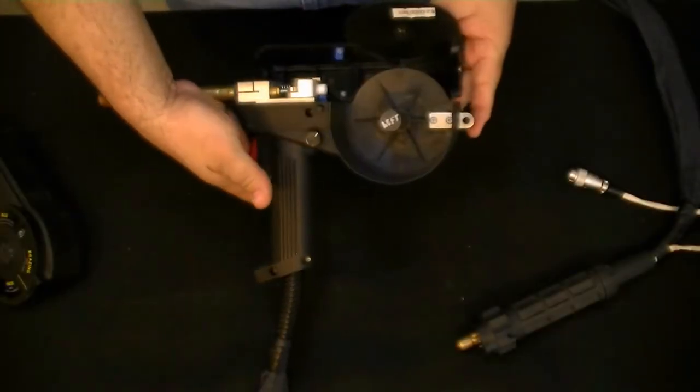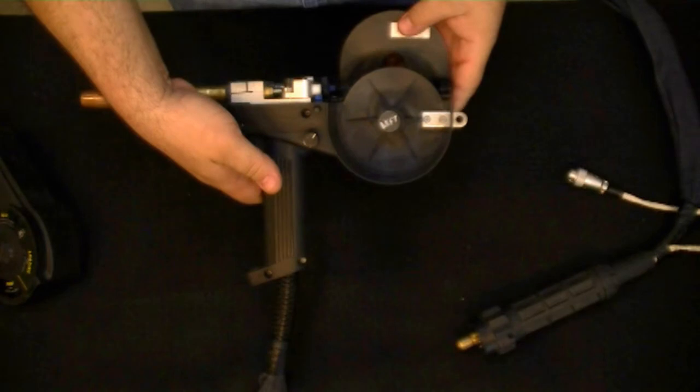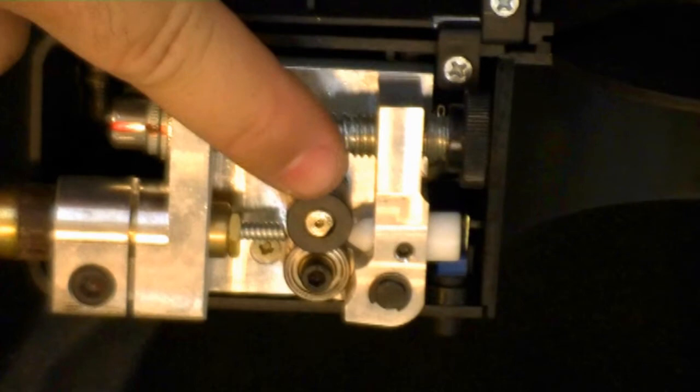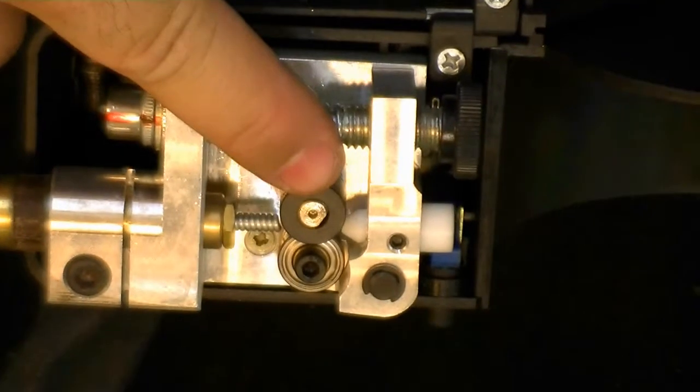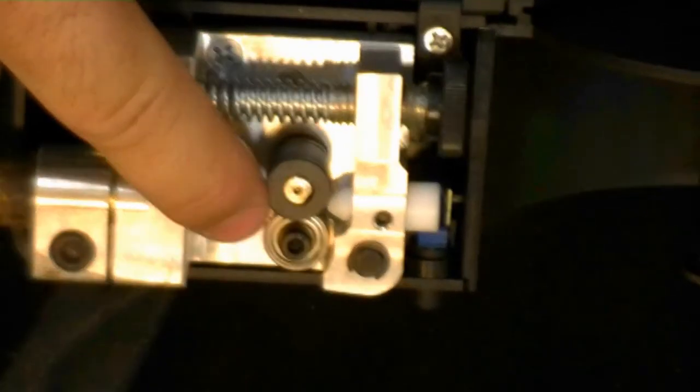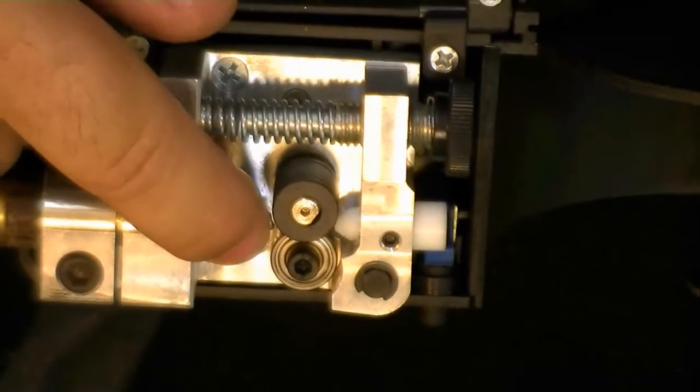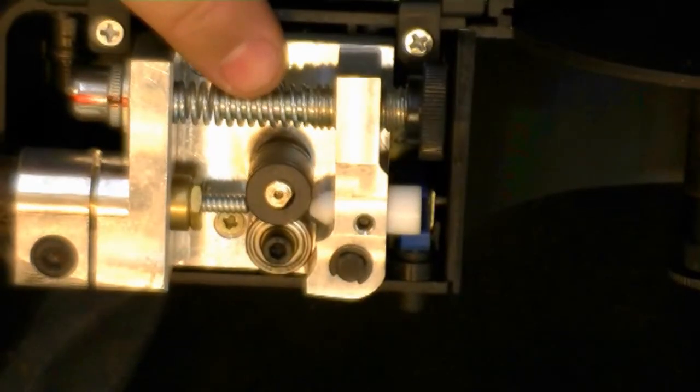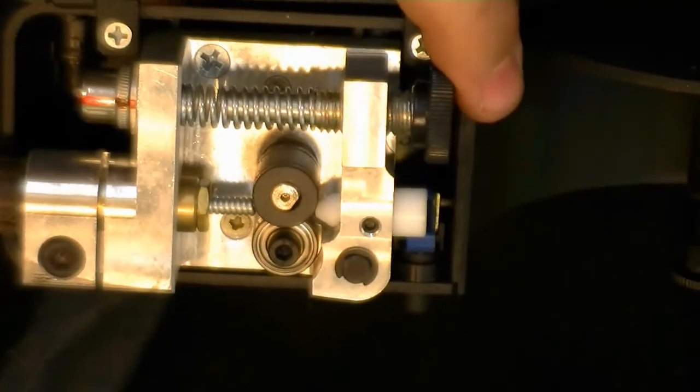Now let's open the cover and take a look at the basic internal components. The wire feeder mechanism is made up of the drive roller, the idler roller, the gun liner, the spring tensioner, and the tension adjustment knob.